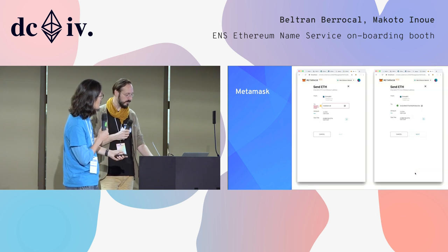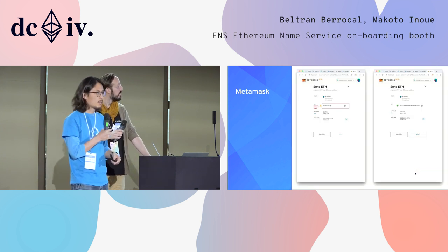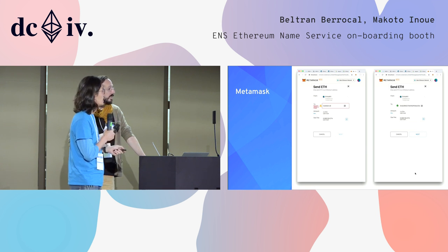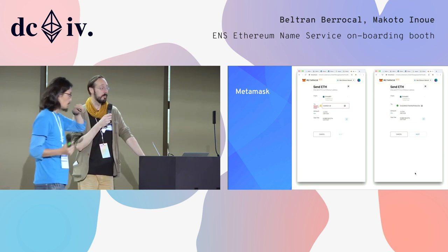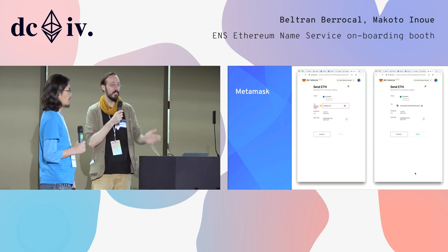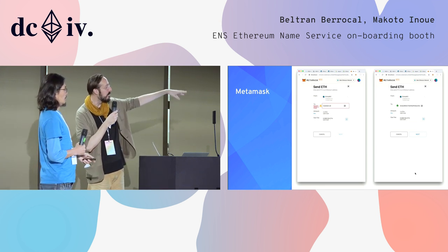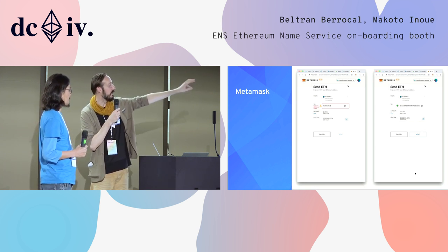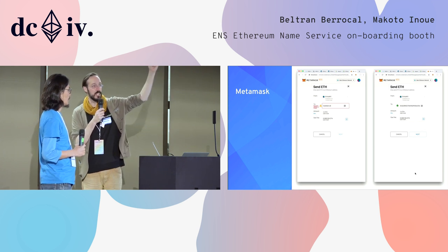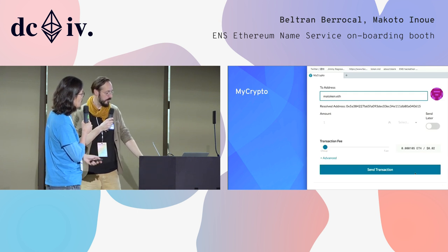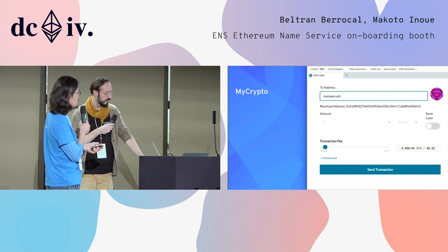In the case of MetaMask, instead of copy and pasting an address, you can look up matokun.eth and it basically replaces it with the same address. This is one of the very first basic use cases — to give convenience to send to a name instead of an address. Some wallets already resolve and transform the name into the hash of the address that it points to. Same thing for MyCrypto — same logic.